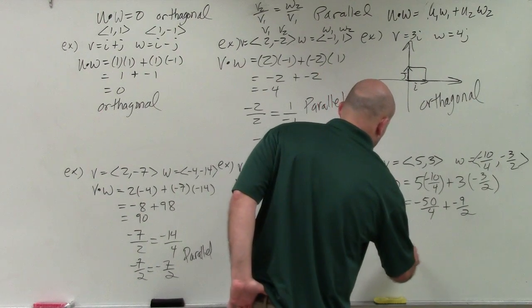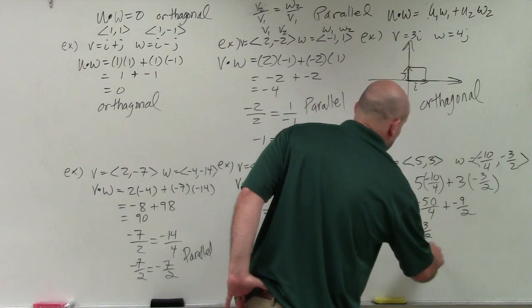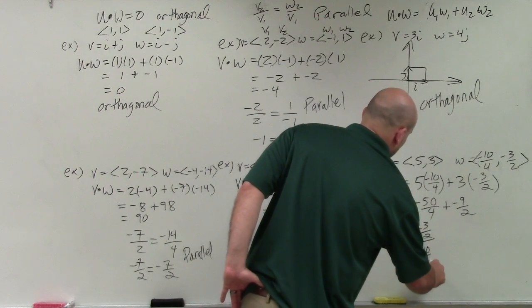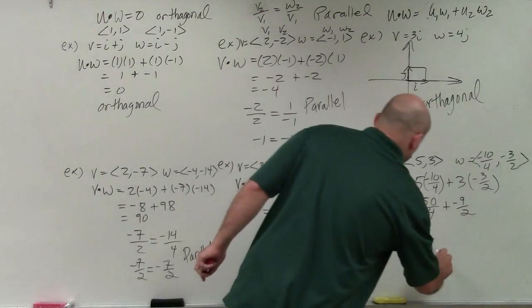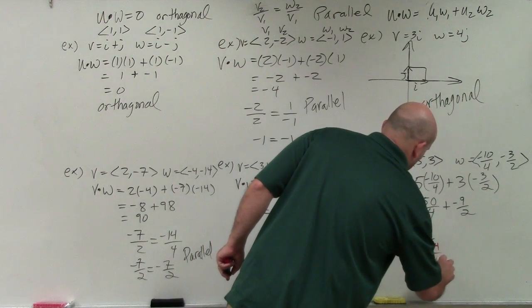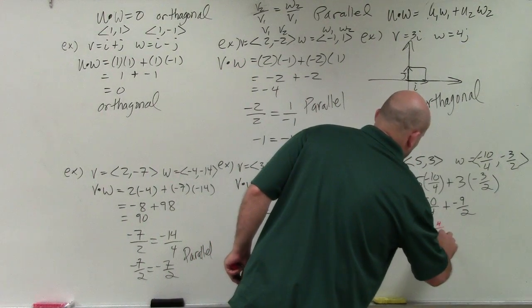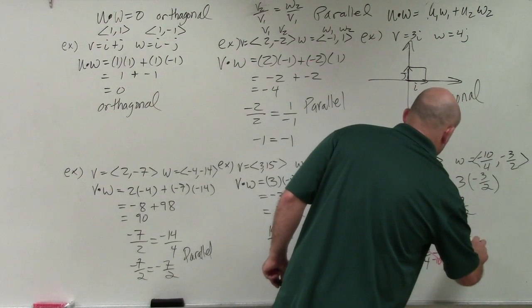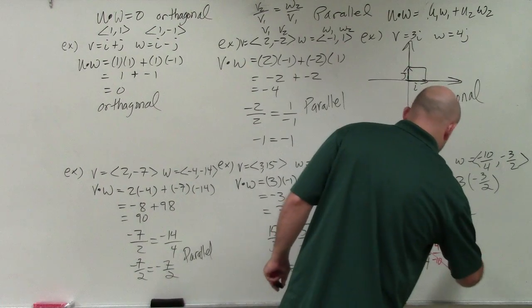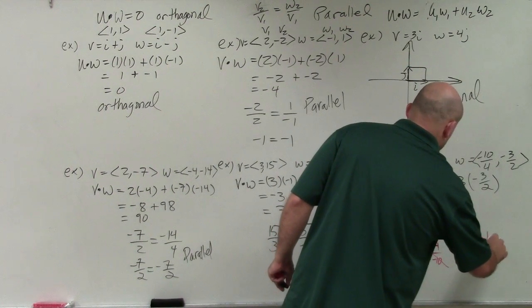Let's check the parallelism. So I have 3 over 5 is equal to a negative 3 halves over a negative 10 fourths. Again, when you have a fraction divided by a fraction, you can multiply by the reciprocal. So I'll multiply by 4 over negative 10. That goes now to 1. So I'm left with a negative 12 over negative 20.